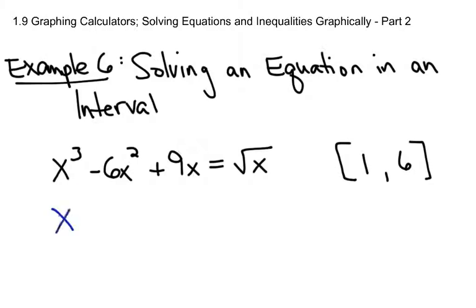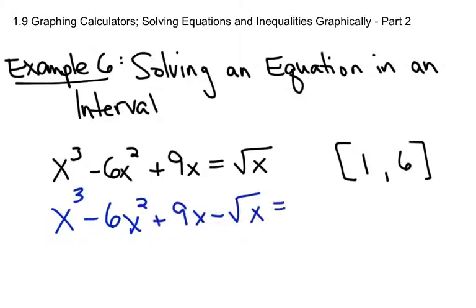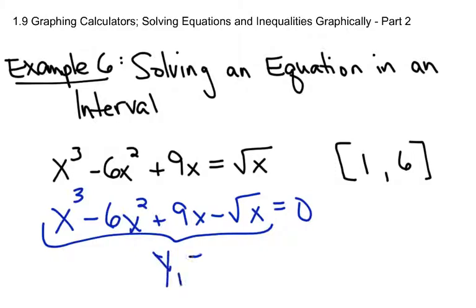First of all, I would make this be an equation that's equal to zero. If you subtract the square root of x and set it equal to zero, and then put this part of the equation into y1 equals, the solution is where the graph hits the x-axis. So you're just looking for the x-intercept. That's a lot better than trying to do this algebraically — trust me, you don't want to do this algebraically. It'd probably take you about two days.